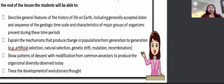2. Explain the mechanism that produced changes in population from generation to generation. So that focuses on the evolution of mankind, specifically with the following ideas: artificial selection, natural selection, genetic drift, mutation, and recombination.